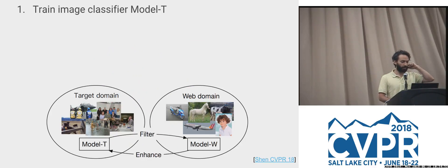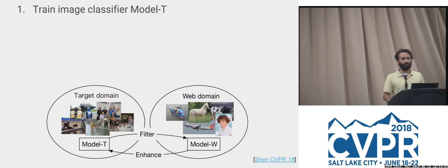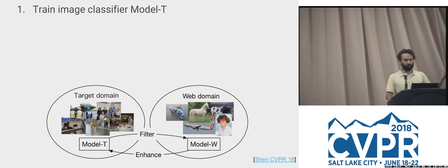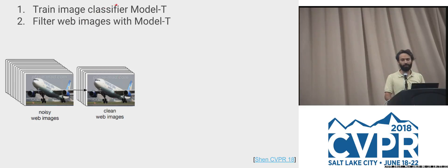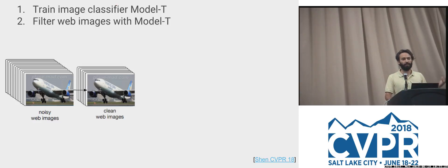There is a paper presented here at CVPR that caught my attention — worth checking the poster. You have a target domain you care about, say Pascal VOC, and you query the internet for images. You get many images — for airplanes, some would be military planes, not what you're looking for. But you first train a classifier on Pascal VOC airplanes, apply this classifier over the web images, and reject anything the classifier doesn't recognize as an airplane. This ensures the domain of airplanes you end up with is closer to the one you care about.